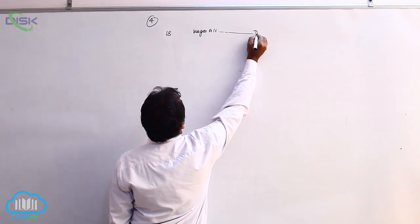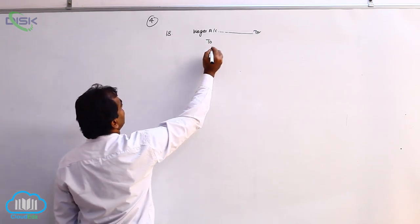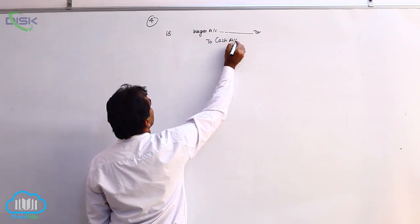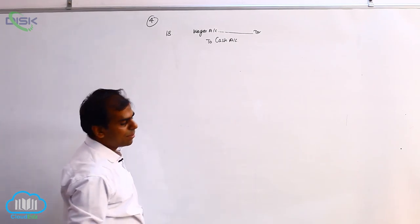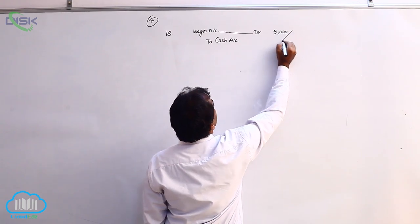So we say wages account debit. Paid means cash is going out. Cash being real and applying the rule of real account, we are crediting cash because it is going out. The amount being 5000. Your narration would be being wages paid.